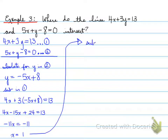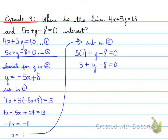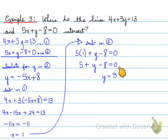Next step: sub in equation 2. We're going to sub x equals 1 into equation number two. So we have 5 times 1 plus y minus 8 equals 0. We get y minus 3 altogether. We move the minus 3 over — it becomes plus 3 — so y is equal to 3.